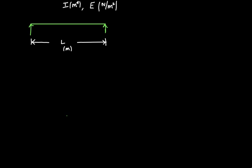Now, what is the load acting on the beam? The beam is subjected to a uniformly distributed load. The magnitude of this uniformly distributed load is W Newton per meter, which means over a span of one meter, the total load acting on the beam is W. So the yellow squiggles indicate the uniformly distributed load. Now let us draw the shear force and bending moment diagram.